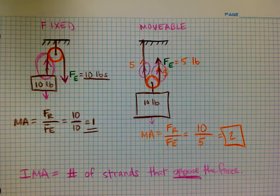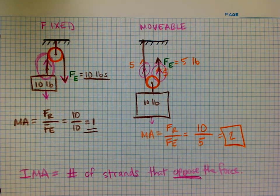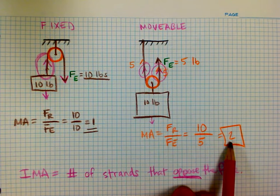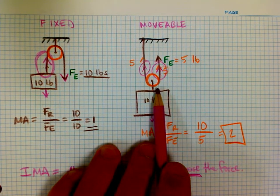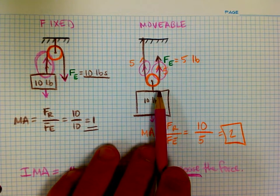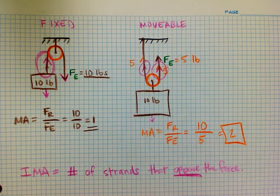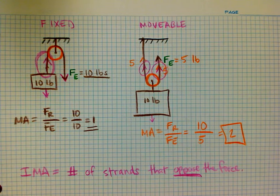One last thing: with the movable pulley, a mechanical advantage of two means I also have to pull up twice as far to move the object. For every foot I pull up, it only rises six inches off the ground. We do have a trade-off with distance, as always with simple machines, but that should get you started on your simple machine problems.